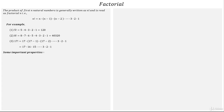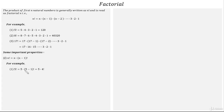Now some important properties for factorial. Property 1: factorial n can be written as n into factorial (n-1). For example, factorial 5 can be written as 5 into factorial 4.